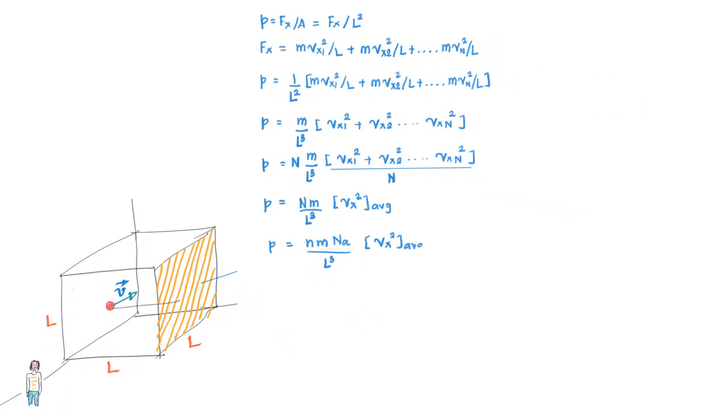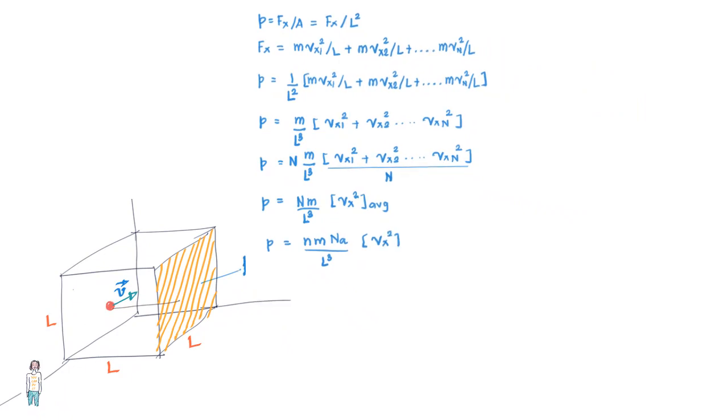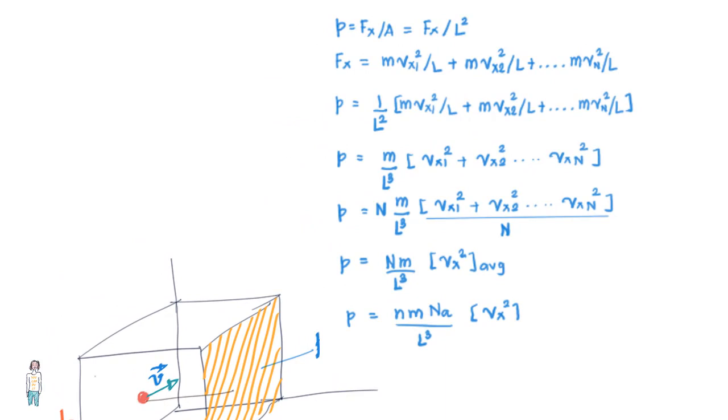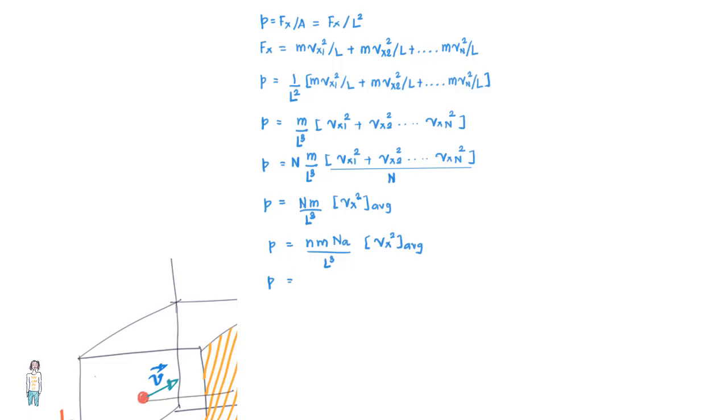But we see that m times NA or m times Avogadro's number is the molar mass of the gas, or the mass of one mole of it. You can also see that L cubed represents the volume of the box. So we go ahead and write this equation as p equals nM vx squared average upon the volume V.